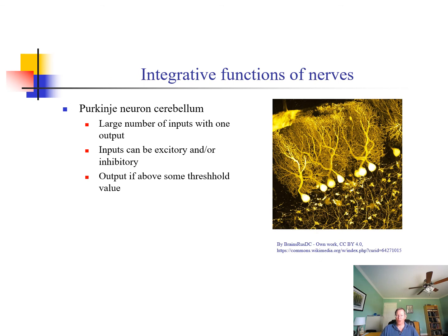Another thing that neurons do quite well is integrate information. The picture shown here is of Purkinje neurons, found in the cerebellum. You can see there are many, many dendrites, but the output is very limited — much like electrical circuits that can take lots of information and give a single output. The cerebellum and these Purkinje neurons are able to integrate a large amount of information and put out a signal above threshold.